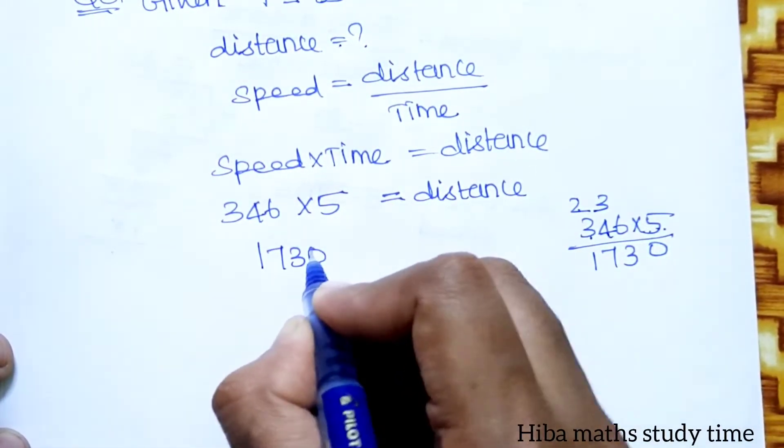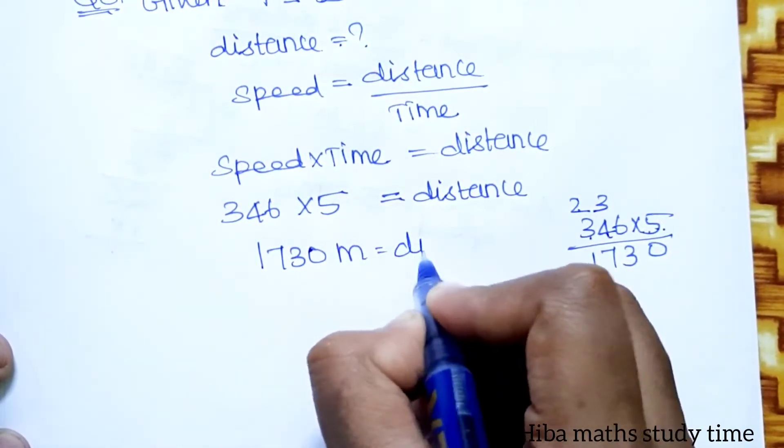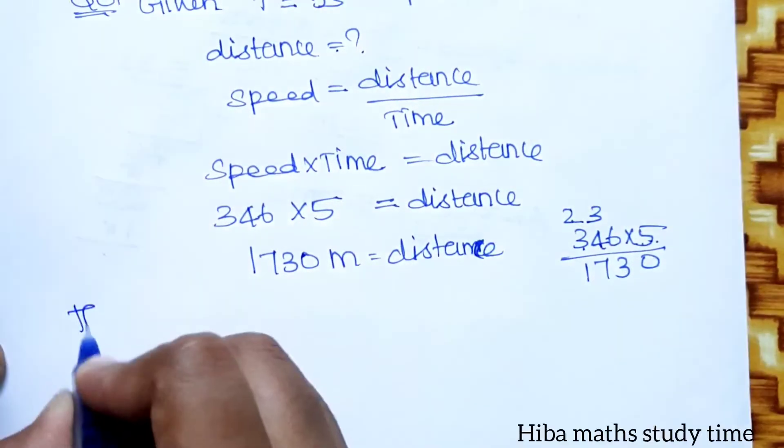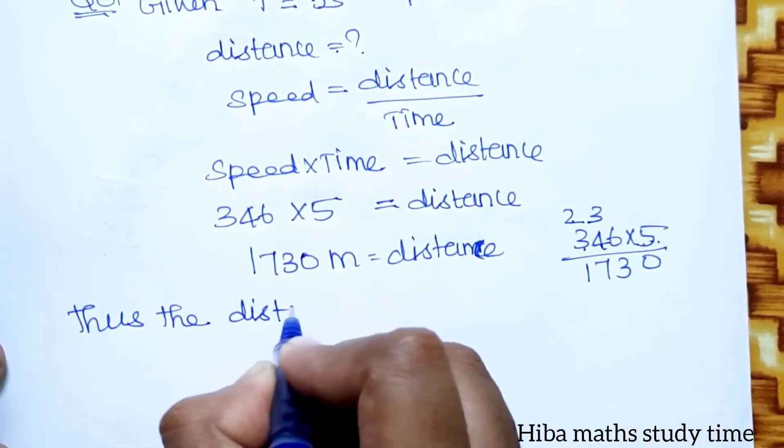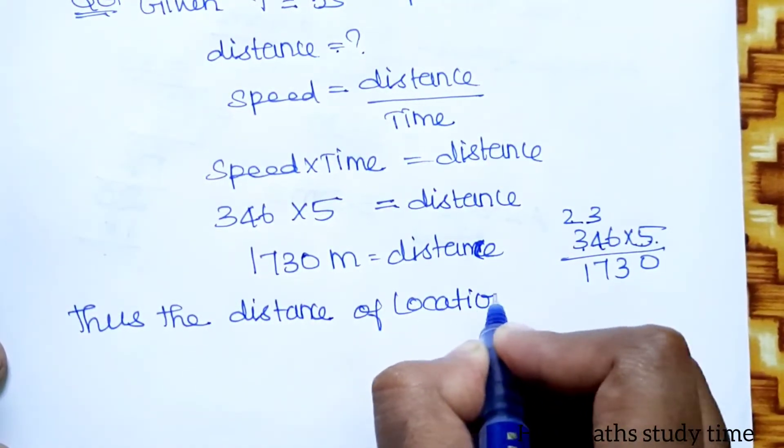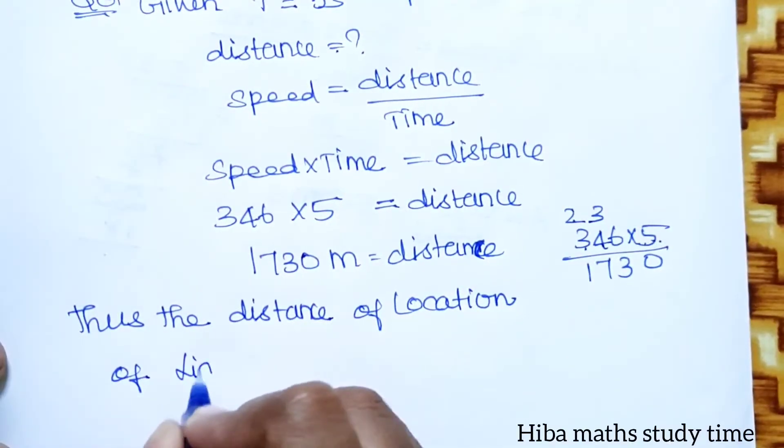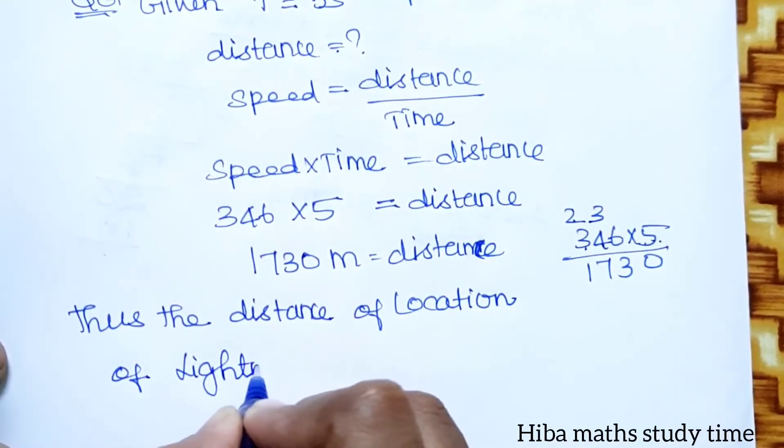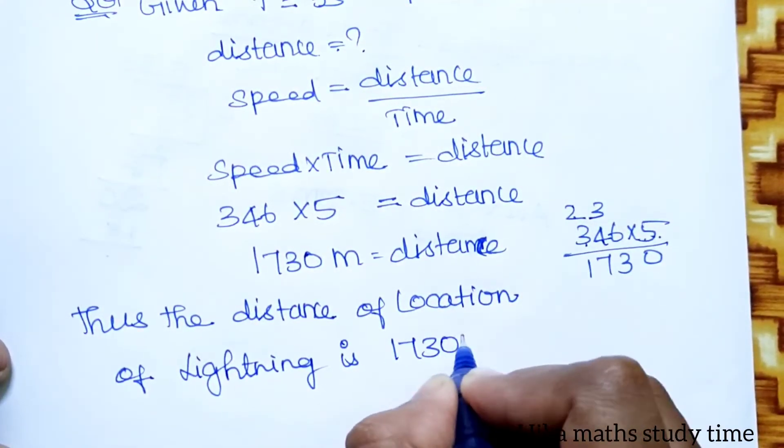So answer is 1730 and distance unit is meter. Thus the distance of location of lightning is 1730 meters.